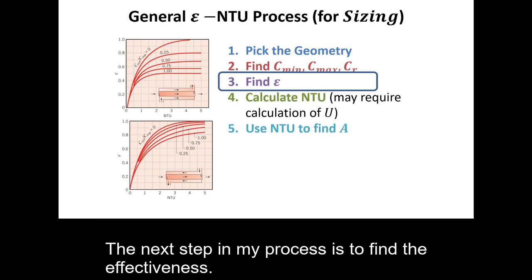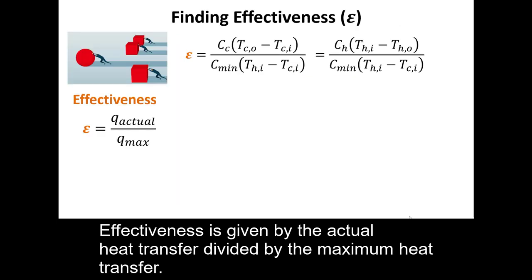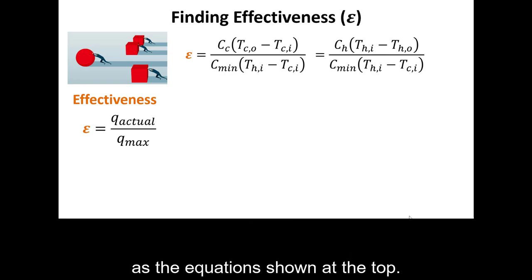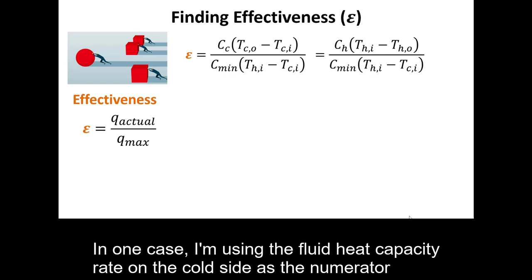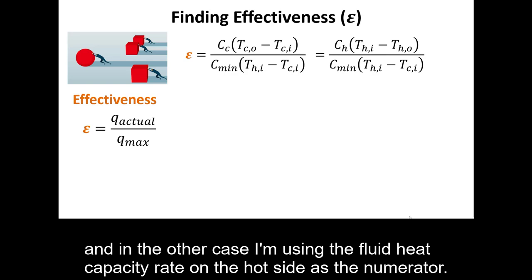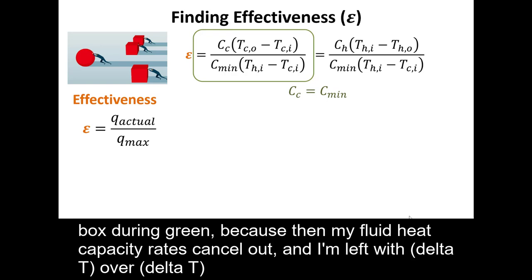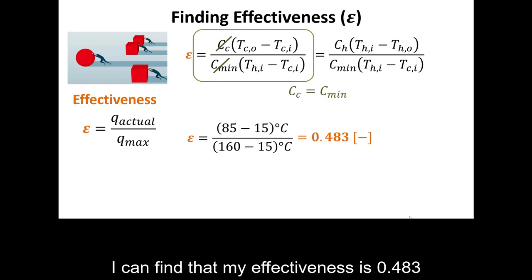The next step is to find the effectiveness. Effectiveness is the actual heat transfer divided by the maximum possible heat transfer. I set up the effectiveness using the fluid heat capacity rate on the cold side as the numerator since C_min is C_cold, which causes the fluid heat capacity rates to cancel, leaving delta T over delta T. I find the effectiveness is 0.483.